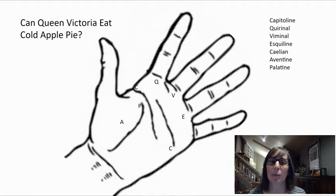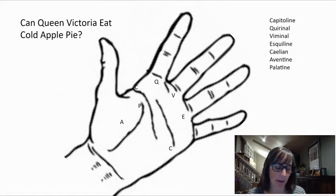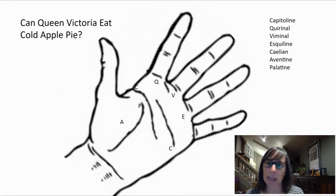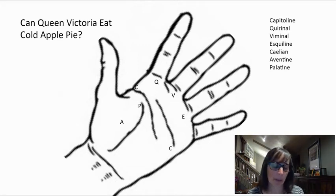Okay, so you can copy what's here on the screen and draw these on your hand. You're going to make a C for Capitoline, Q for Quirinal, V for Viminal, E for Esquiline, C on the other edge of your hand for the Caelian, A for the Aventine, and P for the Palatine.